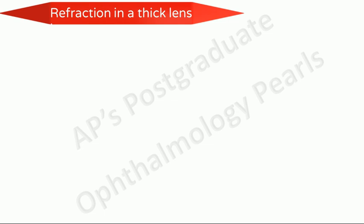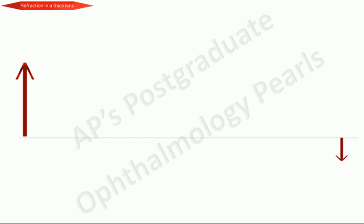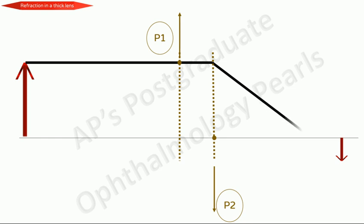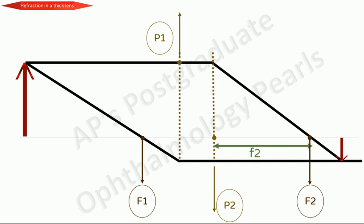Coming to thick lens optics, there is a distance between the two refracting surfaces that cannot be ignored. In a thick lens, refraction can be considered to occur at two principal planes instead of one as in a thin lens, which intersect the principal axis at the two principal points. Rays entering the lens parallel to it pass through the second principal focus, and rays passing through the first principal focus prior to striking the lens emerge parallel after refraction. The distance between the second principal point and the second principal focus is the second focal length, and the distance between the first principal point and the first principal focus is the first focal length of the system.